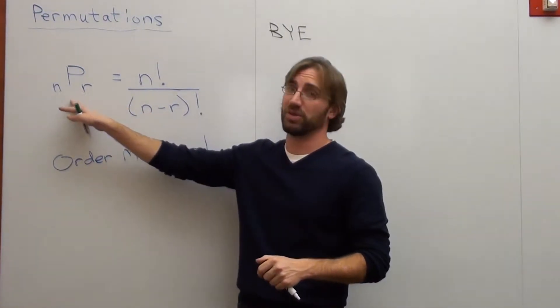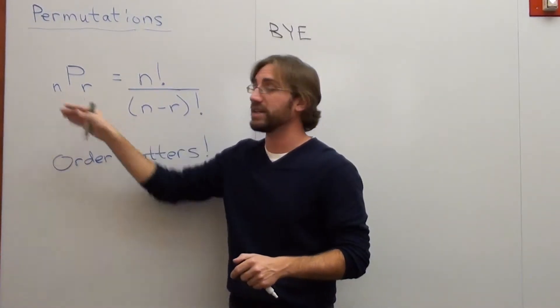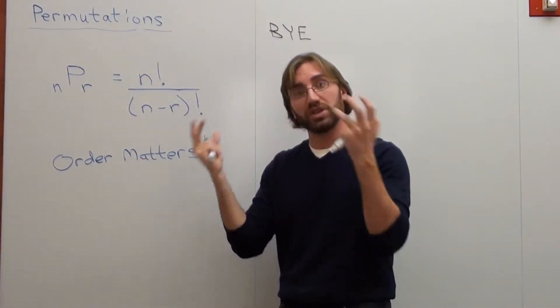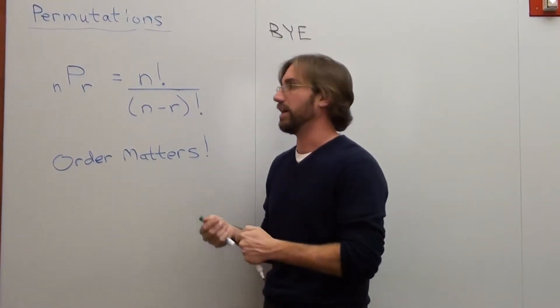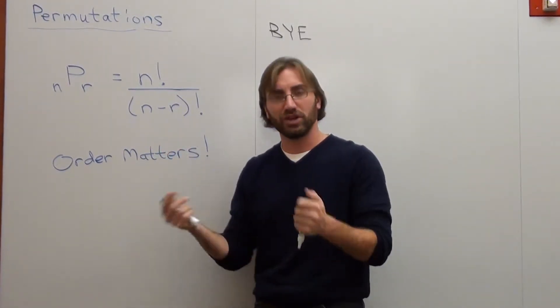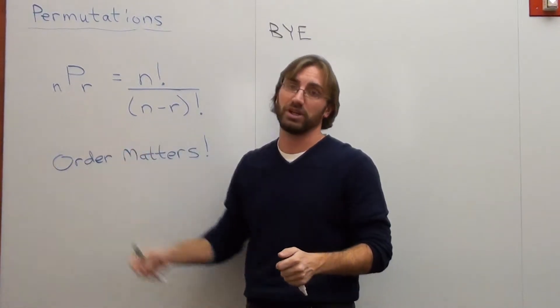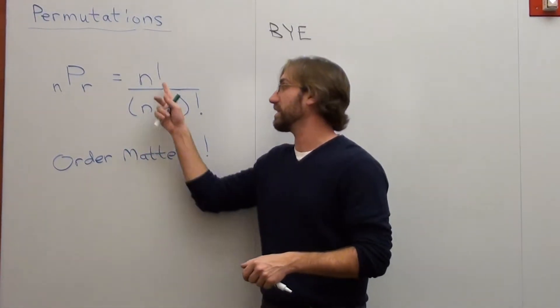So the formula for permutation is notated like this, where N stands for the number that you're working with in total, and R is what you want to take out of a specific number or letter or whatever you're working with. P stands for permutation.